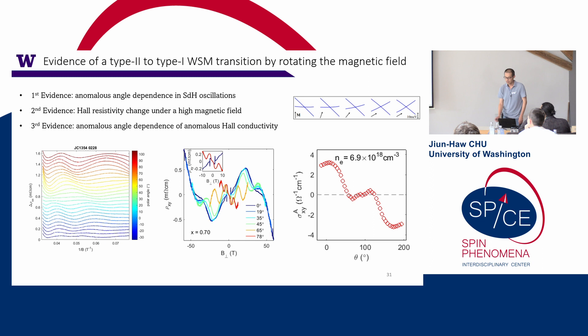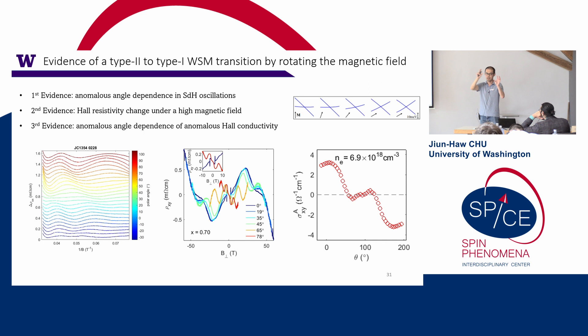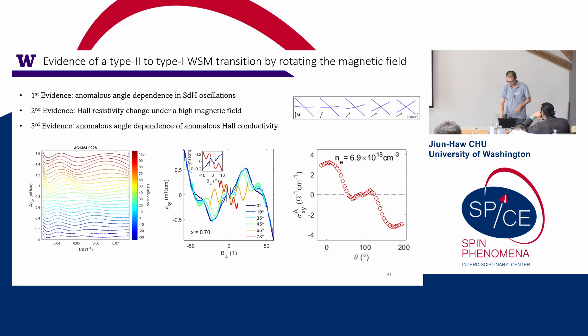To briefly summarize the second result: the system is a type 2 Weyl semimetal when the magnetization is out-of-plane along the c-axis, but you can switch it to a type 1 Weyl semimetal by rotating the magnetization — the Weyl cone tilting rotates with the magnetization. By carefully analyzing quantum oscillations, two-band Hall, and anomalous Hall as functions of angle, we conclude that around 45–50 degrees the hole pocket disappears with a corresponding change in anomalous Hall, indicating a transition to a type 1 Weyl semimetal. That is my summary, and I'm open for questions.